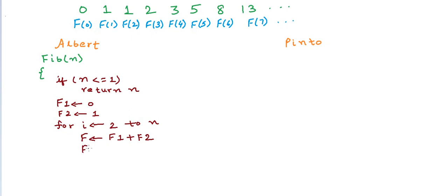We need to update F1 and F2. So F1 now will be F2 and F2 now will be F. And finally, when we come out of this loop, we can return F and this gives us the pseudocode for Albert's implementation.